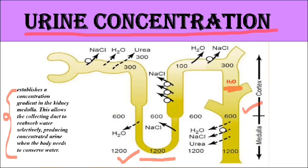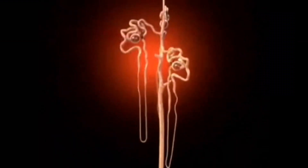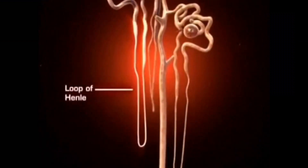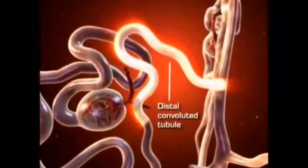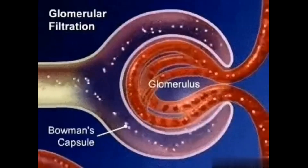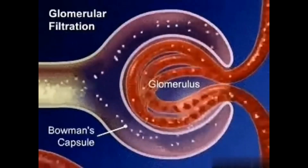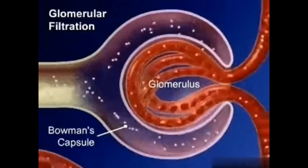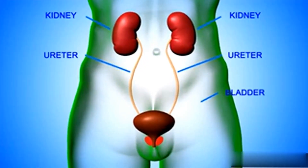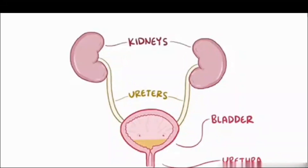This allows the collecting duct to reabsorb water selectively, producing concentrated urine when the body needs to conserve water. Overall, the nephron is a complex structure with specialized segments that work together to filter blood, reabsorb essential substances, and regulate the composition and volume of urine, contributing to overall homeostasis within the body. After the kidney, the next important structure is the ureter.